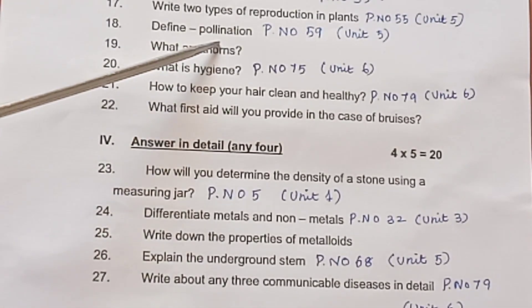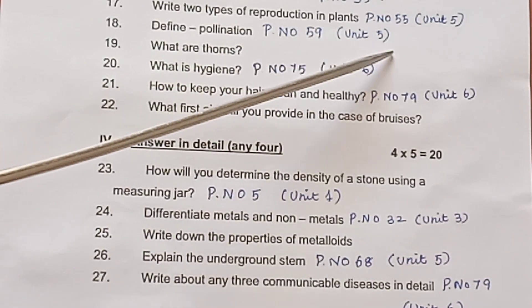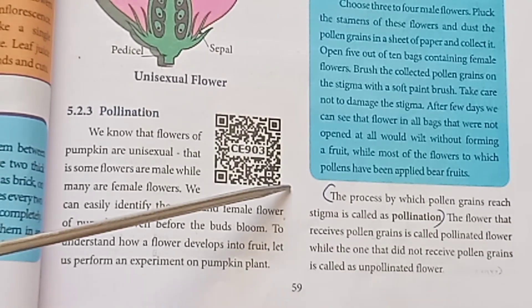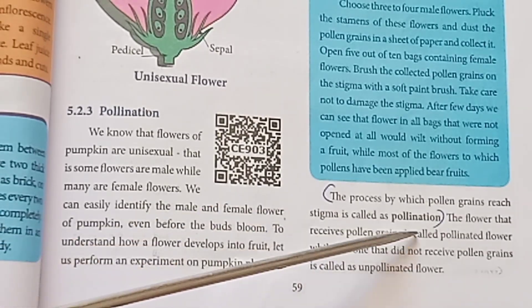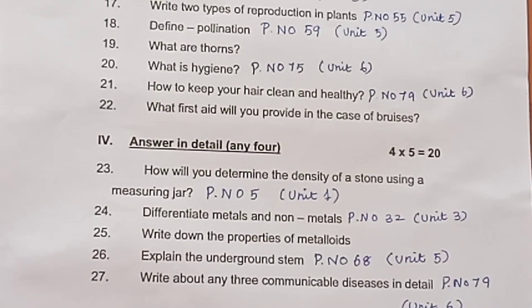Question 18: Define pollination. Page number 59, Unit 5. Answer: Pollination is the process of transfer of pollen grains from the anther to the stigma of a flower.